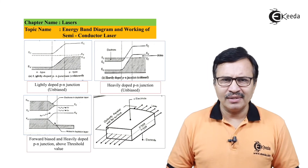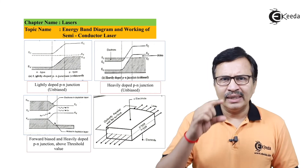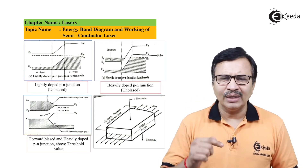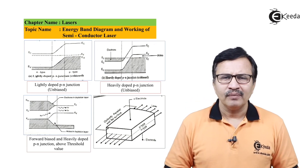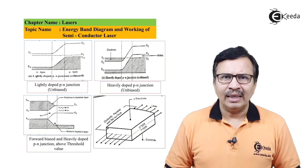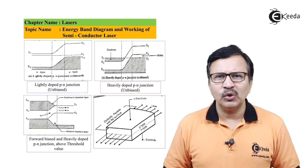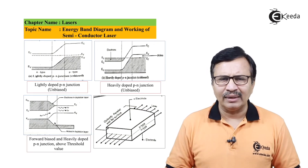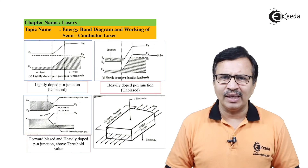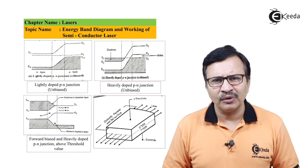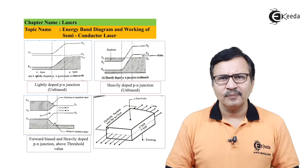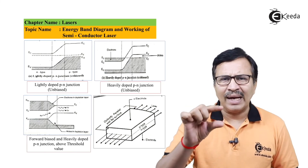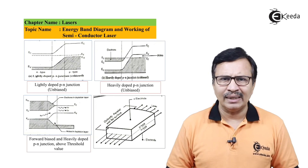The energy of this laser equals the difference between the bottom of the conduction band and the top of the valence band — that is the band gap EG. Therefore, EG = hc/λ, and hence the wavelength λ = hc/EG. Thus, the wavelength emitted is dependent upon the band gap of the semiconducting material.